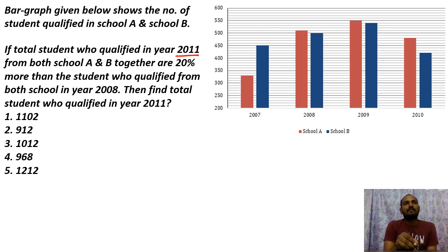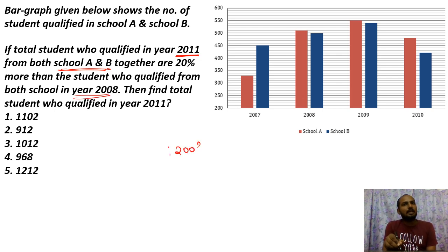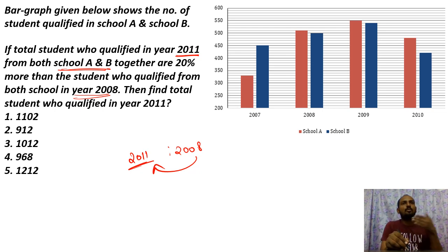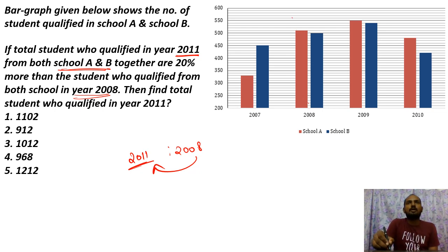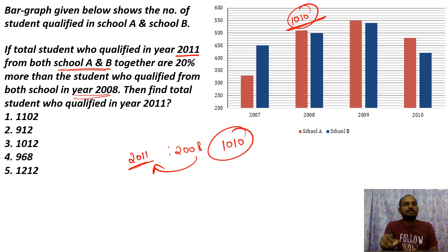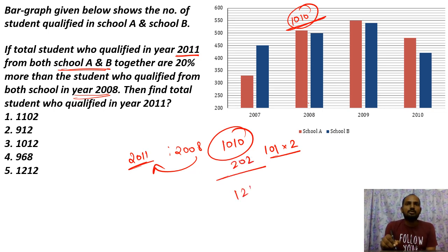Next question: If total students who qualified in 2011 from both School A and B together are 20% more than the students who qualified from both schools in 2008, find the 2011 total. The 2008 qualified total is our base. 10% of that is 50, so 20% is 202. Adding to the base gives 1212. The answer is option 5.